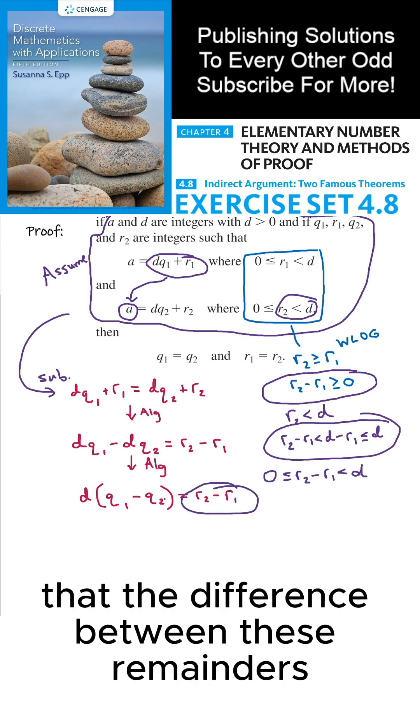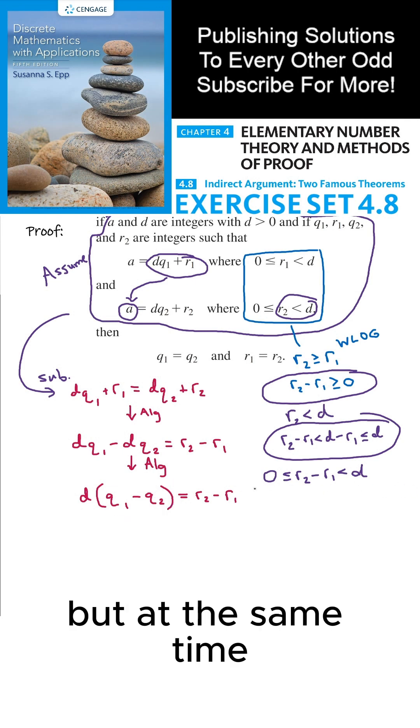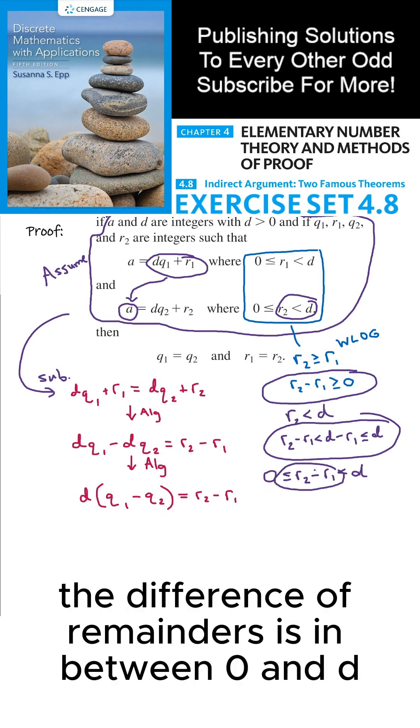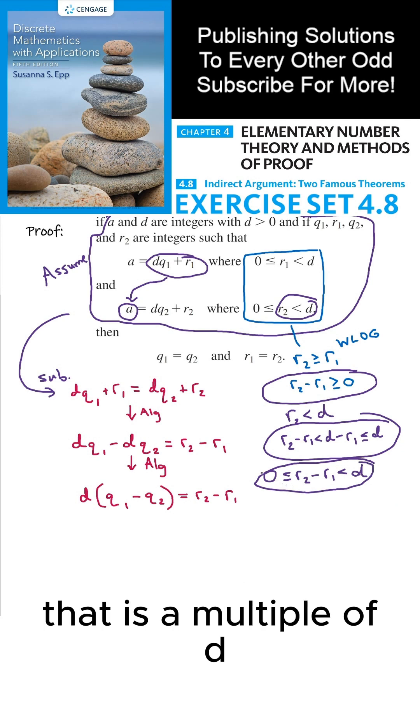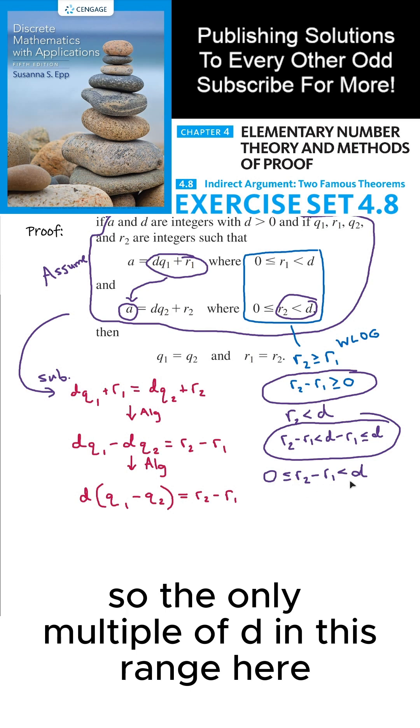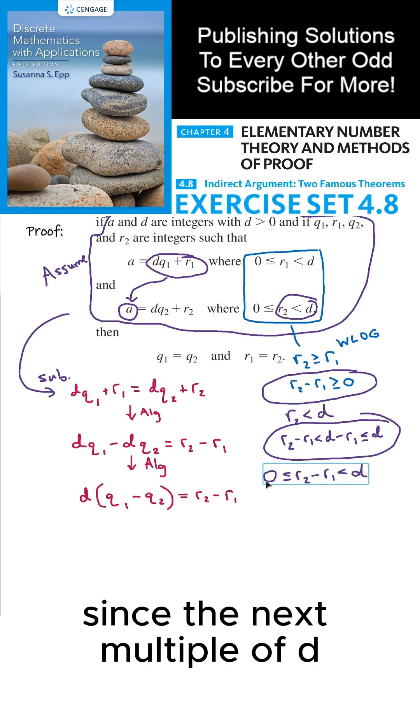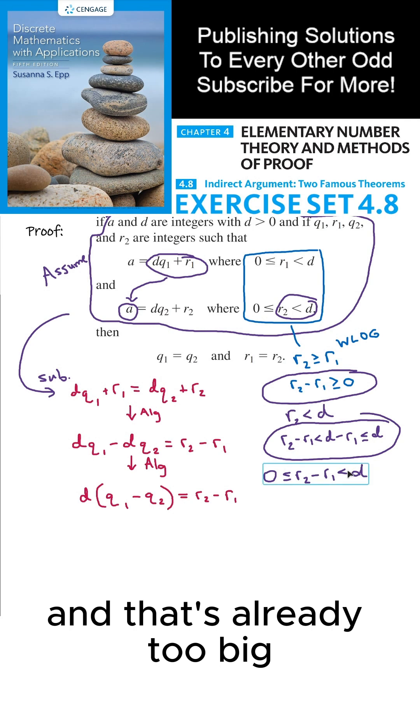And that's important here because now we have that the difference between these remainders is some multiple of D, but at the same time the difference of remainders is in between zero and D. There's only one number in this inequality that is a multiple of D, and that is specifically zero. So the only multiple of D in this range here is specifically zero, since the next multiple of D after zero is D, and that's already too big.